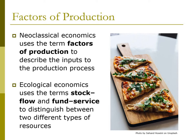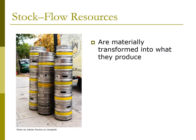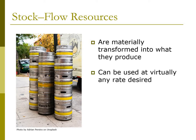So how do we define these two concepts more generally? Stock flow resources are materially transformed into what they produce, and they can be used at almost any rate desired. Productivity for these resources is measured by the number of physical units of the product that they are turned into.